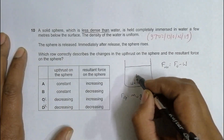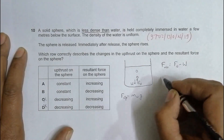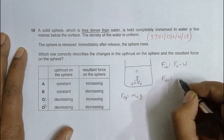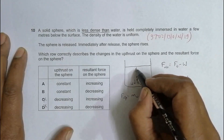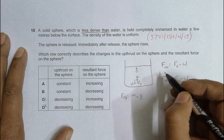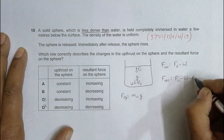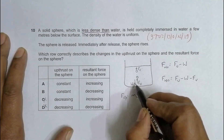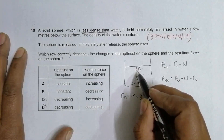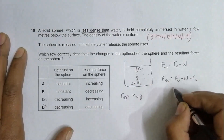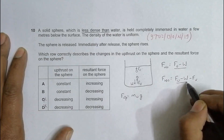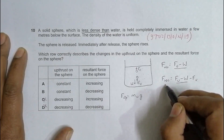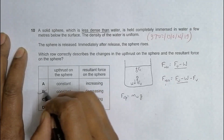As the sphere rises, an additional force appears: the viscous drag force, acting downward. So the resultant force now equals upthrust minus weight minus drag. Since upthrust and weight are constant but drag increases as the sphere speeds up, the resultant force decreases as the sphere rises. This corresponds to choice B.